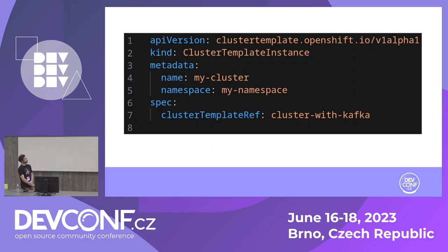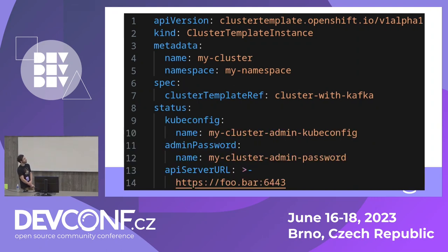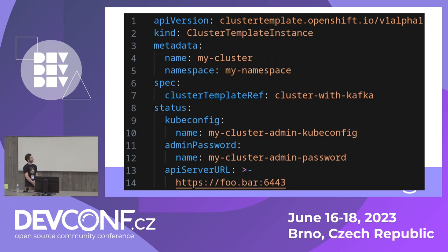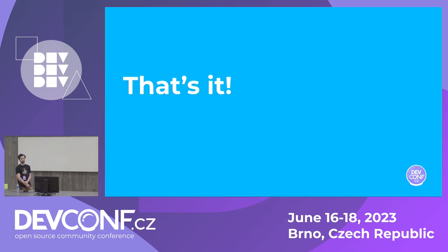You submit this Cluster Template Instance, some magic happens, and after some time in the status you get all the info you need to log into your cluster: API URL, admin password, and the kubeconfig. You can log into the cluster, do whatever you want — you may break the cluster, it doesn't really matter. Once you are done with it, just delete the Cluster Template Instance and the cluster is gone. That's how you can self-service your own clusters.